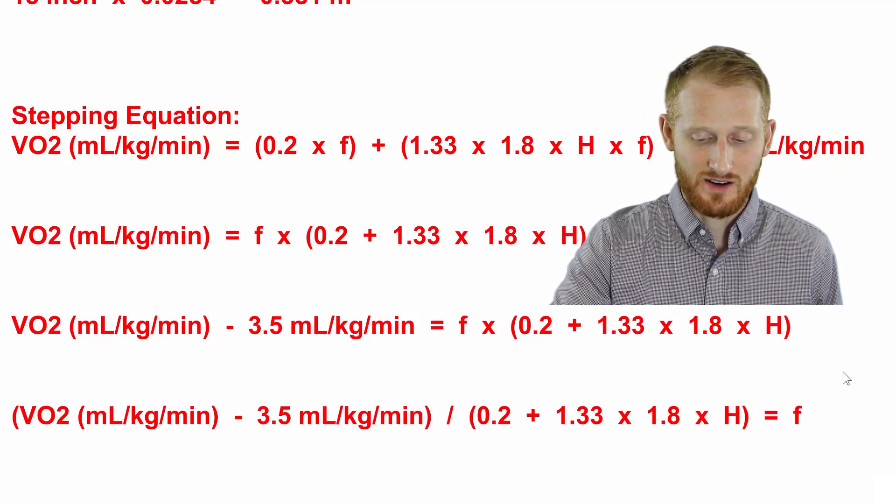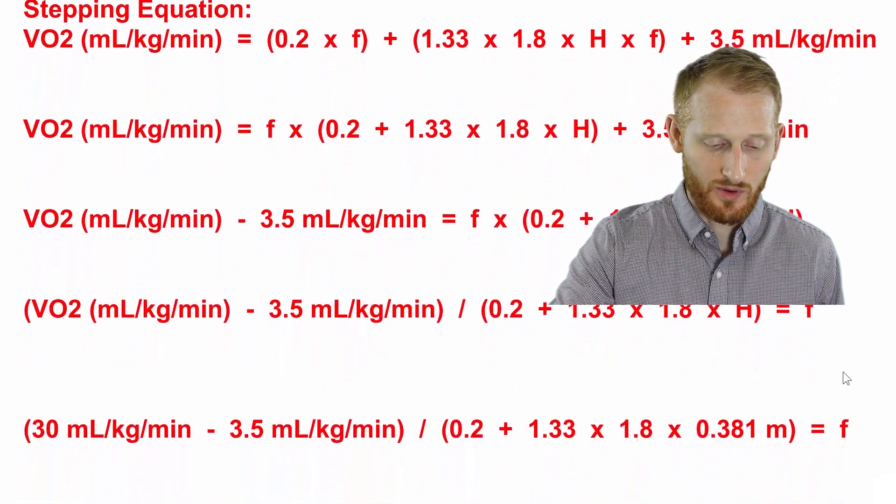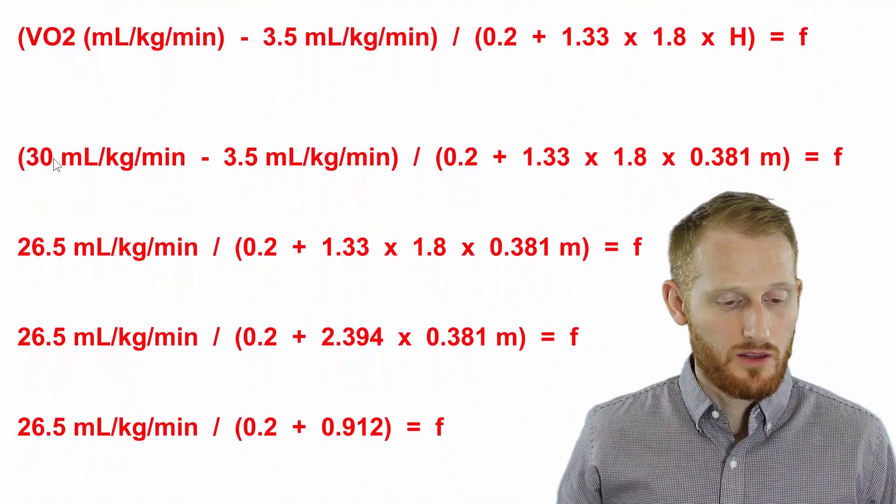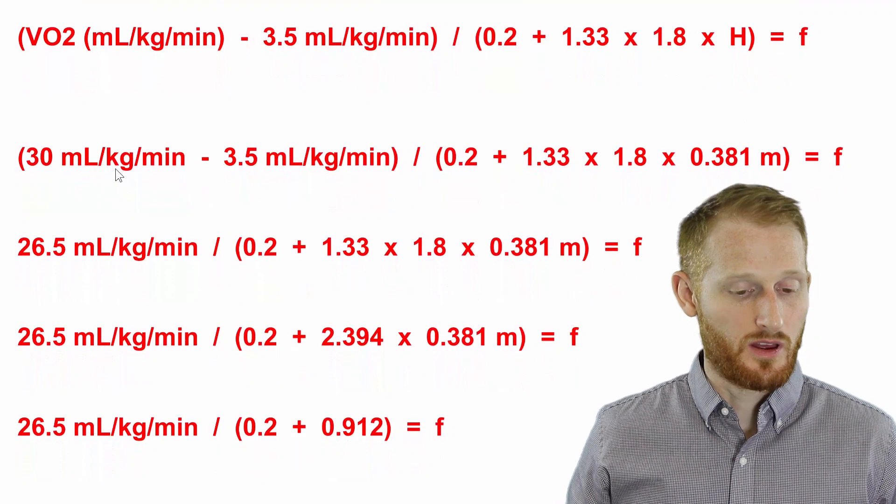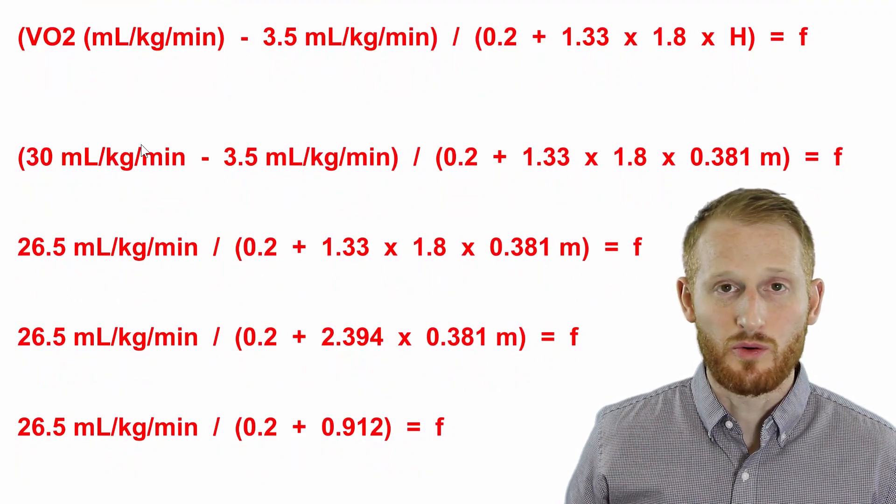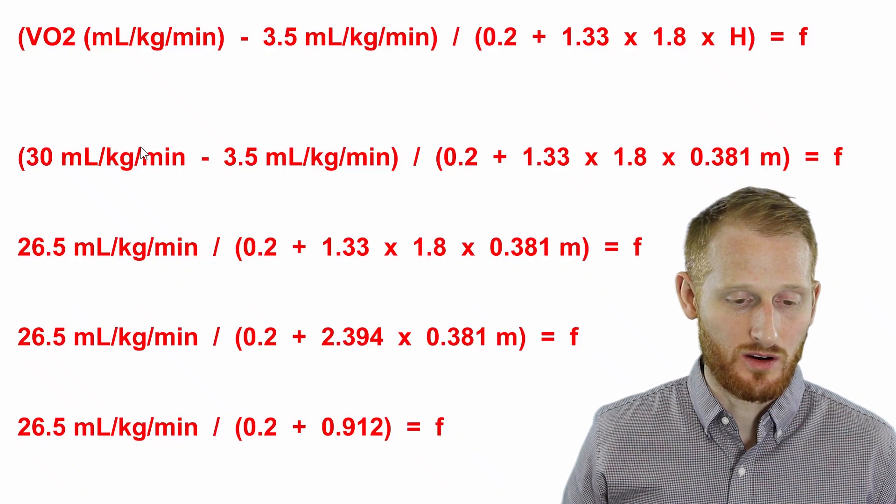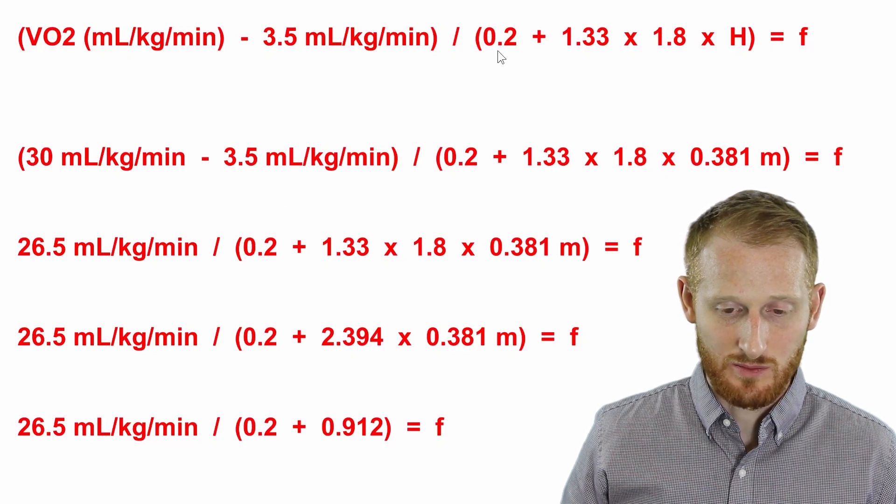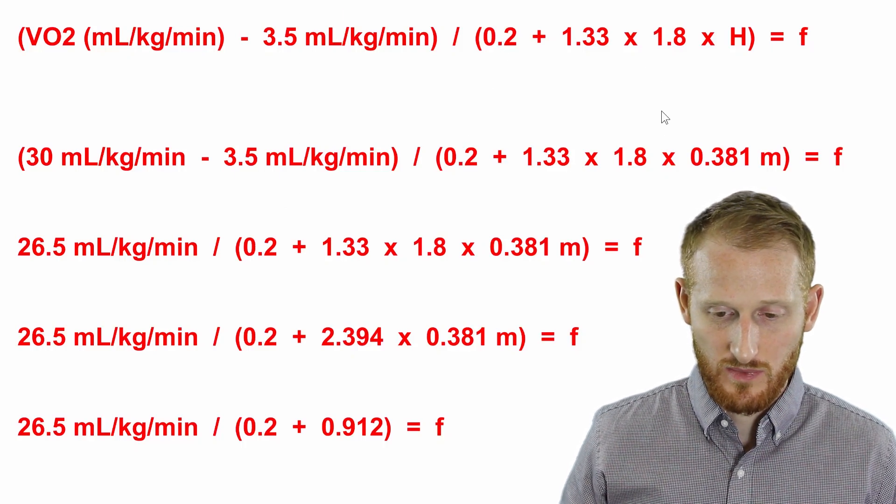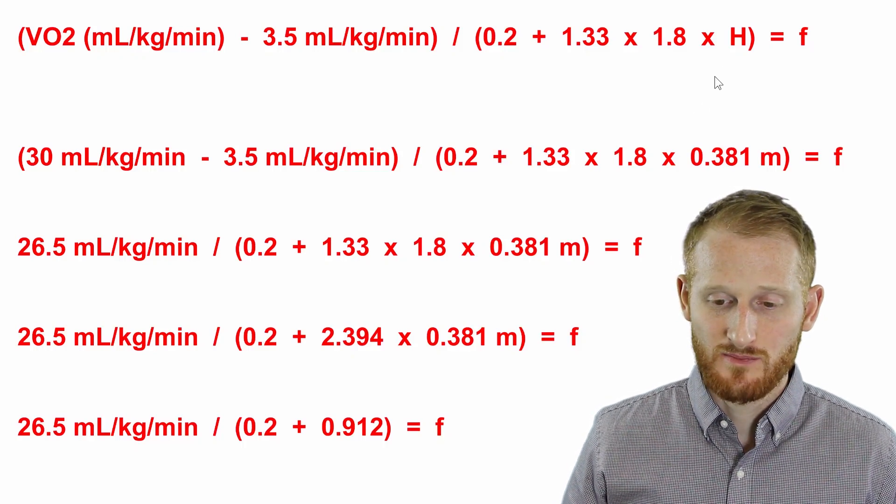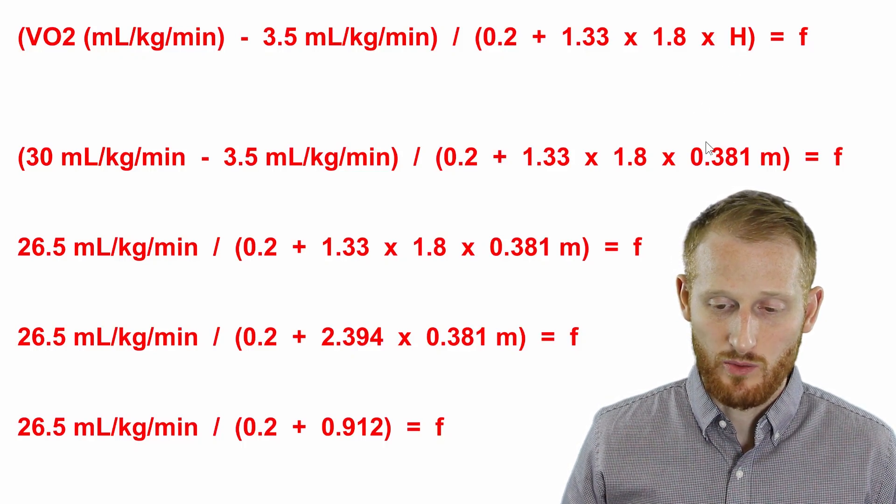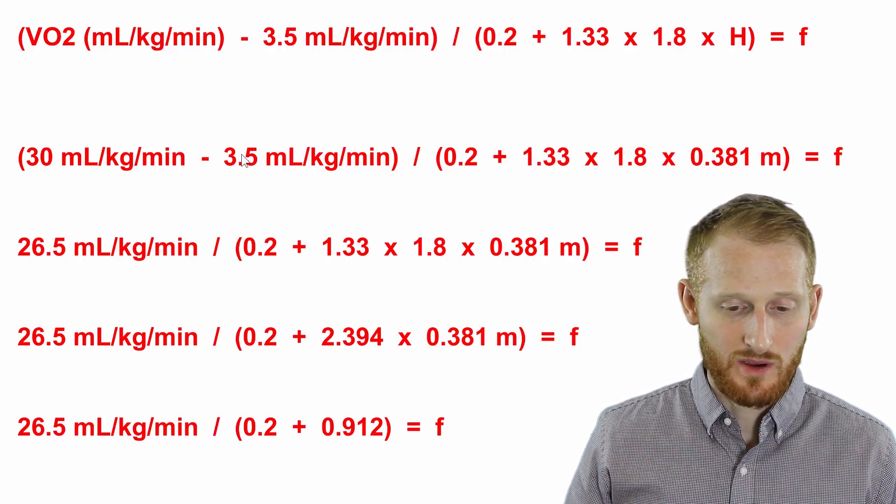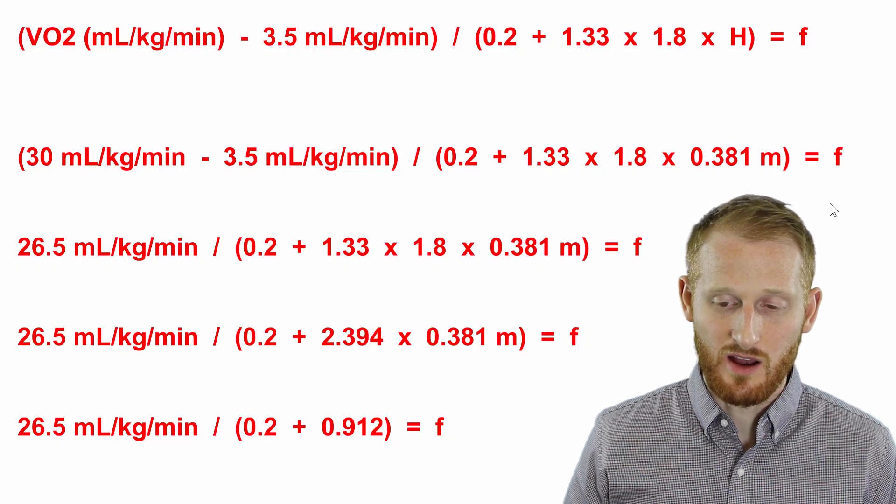So let's go ahead now and start entering our values. We're going to put in here the 30 milliliters of oxygen per kilogram of body mass per minute, which is our work rate and oxygen consumption units that we are looking for for this exercise bout. We're going to keep the resting component the same and keep these three constants in the equation the same. And we know our step height was 0.381 meters when we converted it from inches.